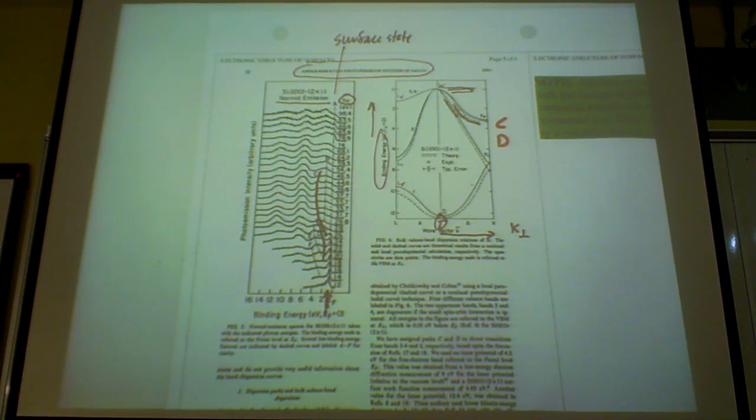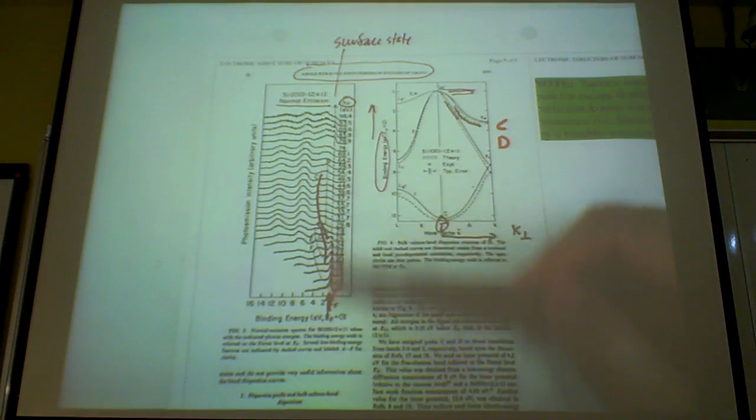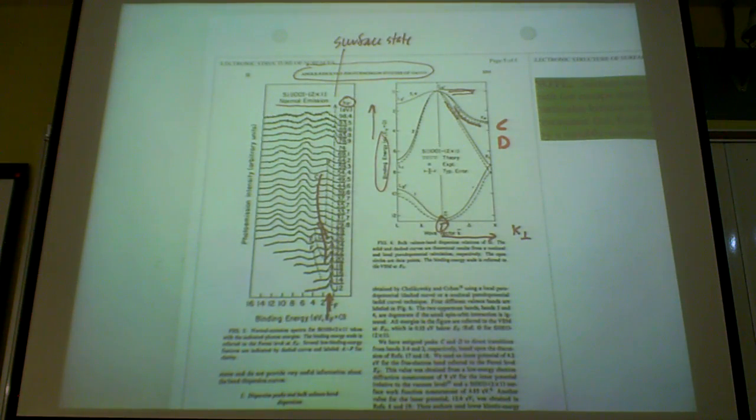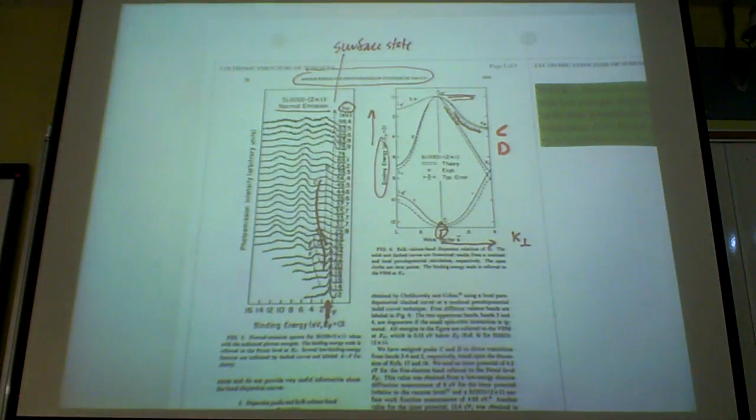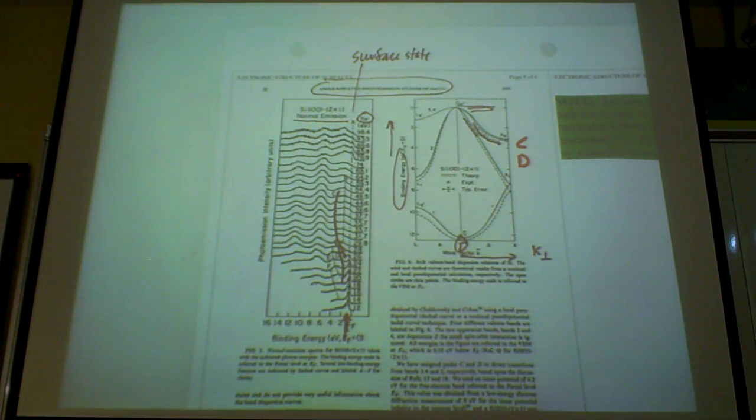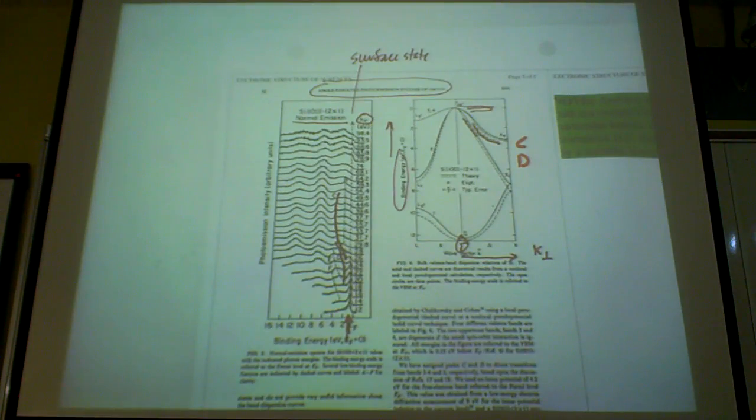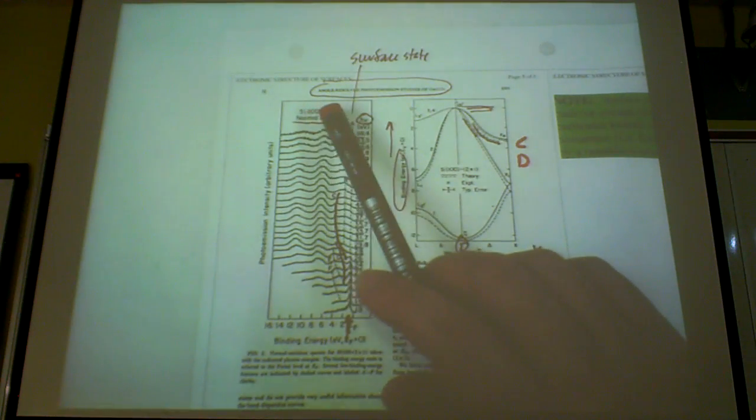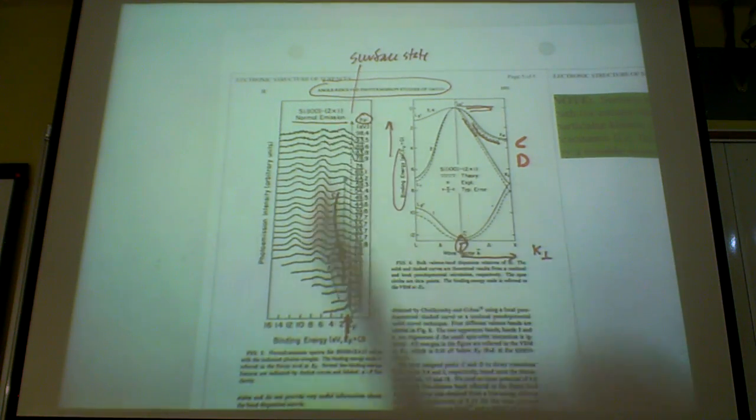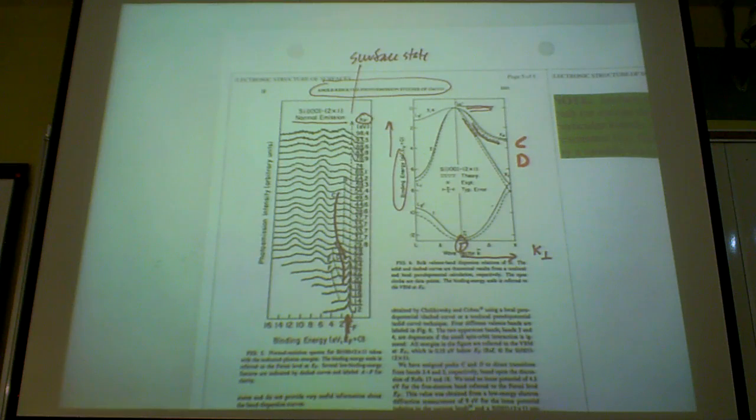Well, you can change the photon energy. If you change the photon energy, here's an experiment that people did in early days. A classic experiment - if you look at silicon 1-0-0, the surface reconstructs 2x1, so this is a clean surface. We are probing silicon electronic structure. The surface plane that you're looking at is the 1-0-0 plane, and the 1-0-0 plane has reconstructed to the 2x1 structure.